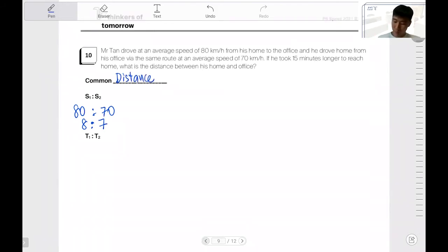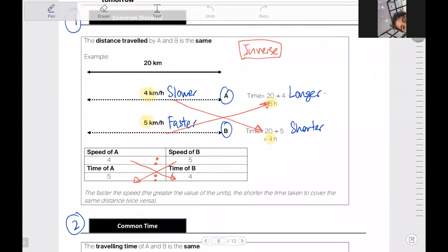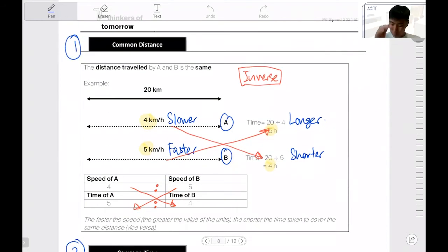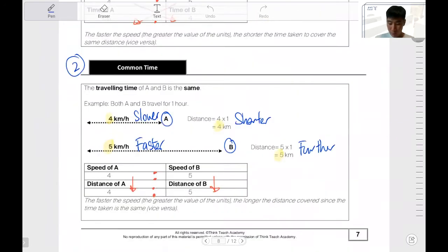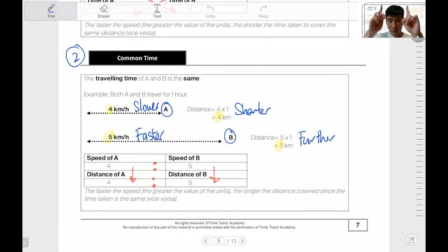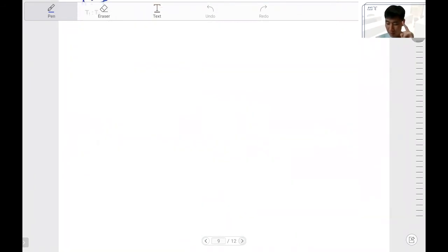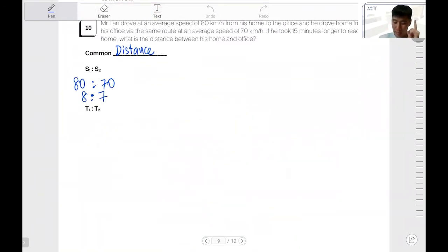Now, if you look at the tables, if I have a common distance, if my speed is 4×5, my time will switch. You see? If it's a common time, if my speed is 4×5, my distance will also be 4×5. Okay, so you've got to ask yourself, what should the ratio of the time be here, time taken here, be?